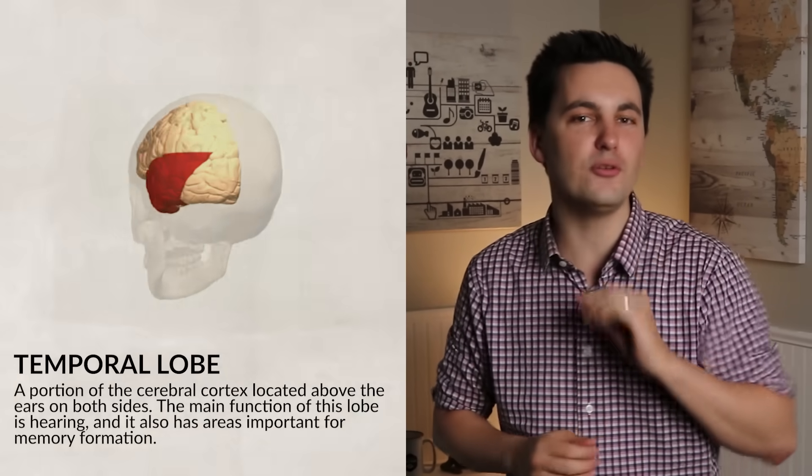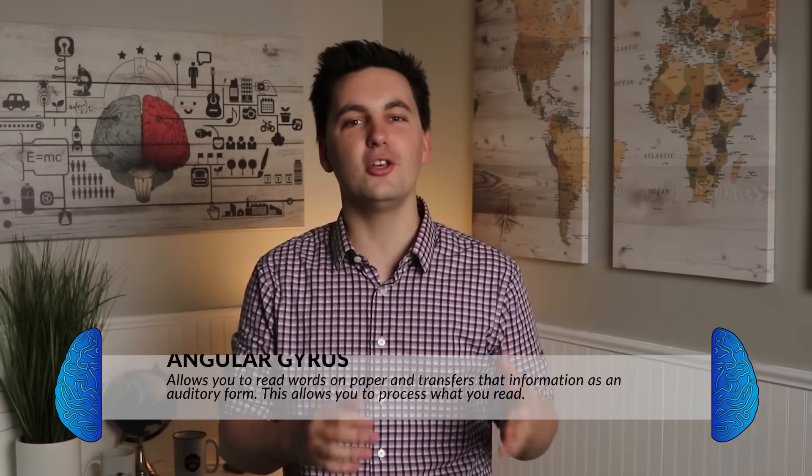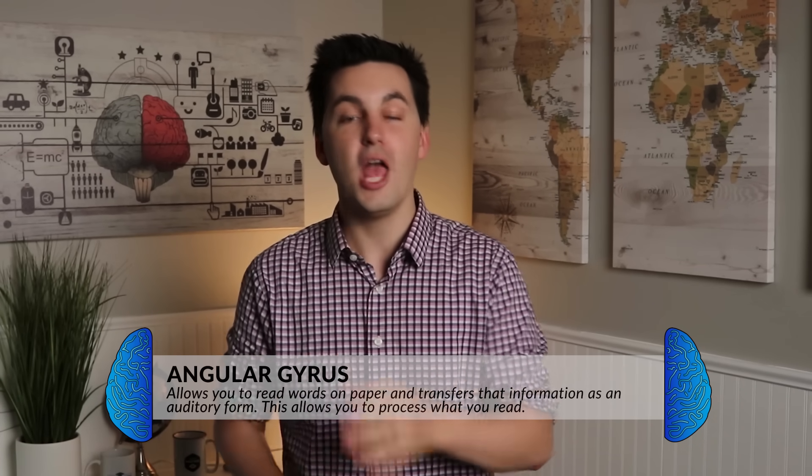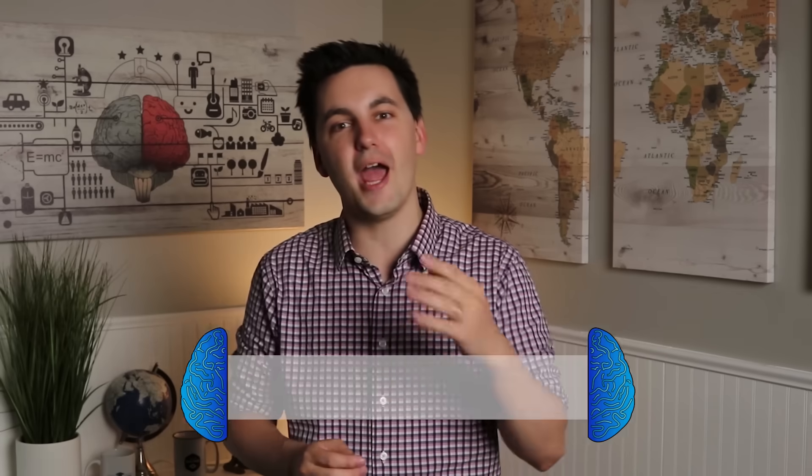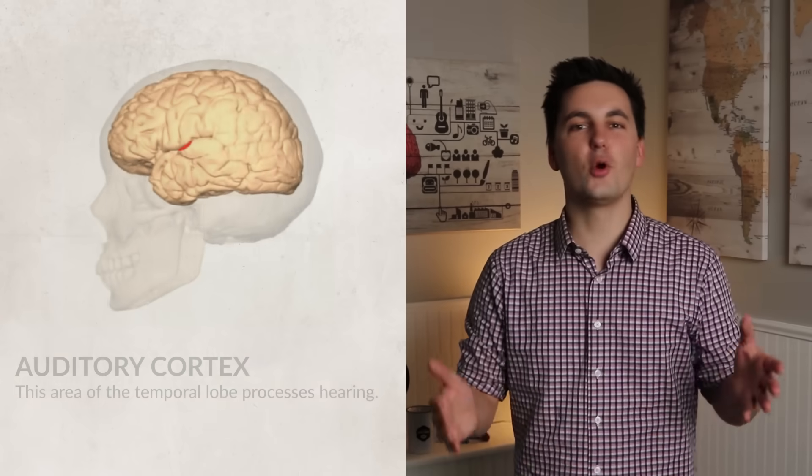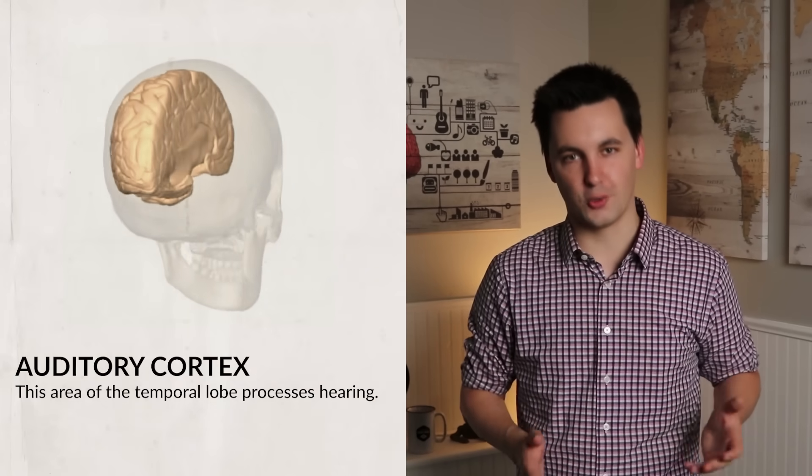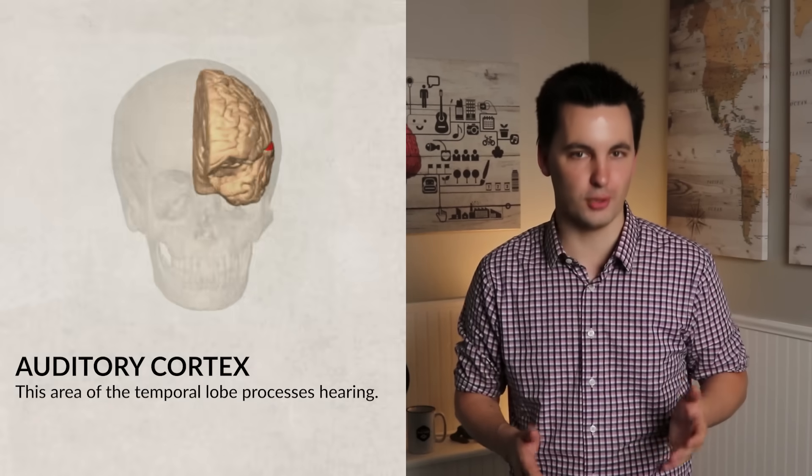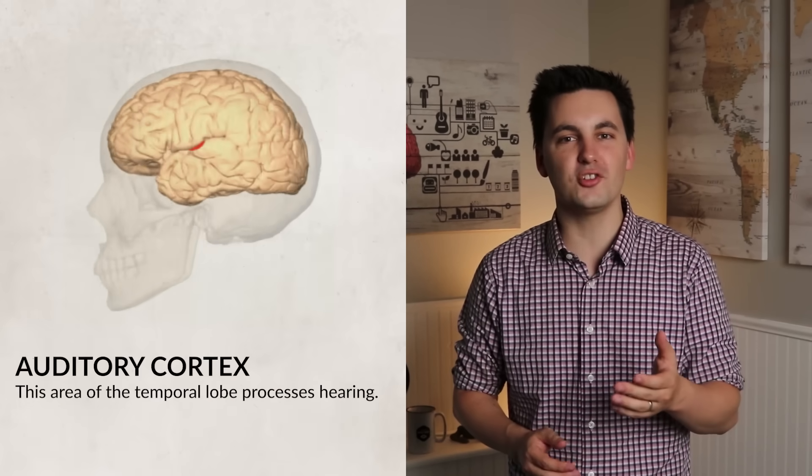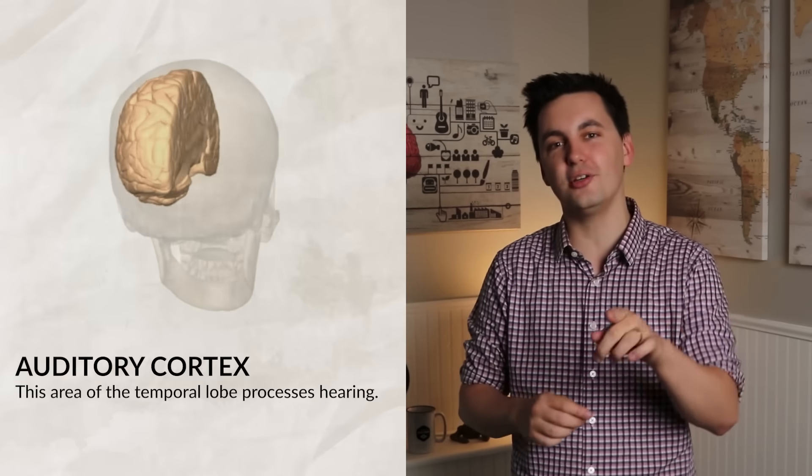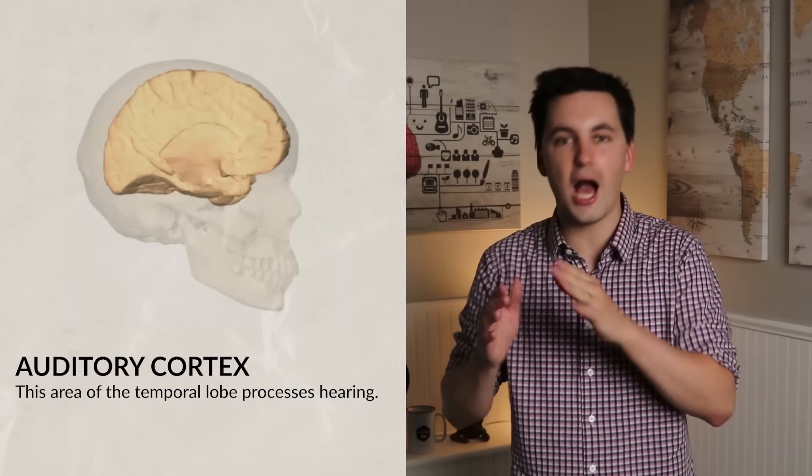This lobe consists of a few different parts. First, remember Wernicke's area. It's responsible for language and also comprehension. It's located in the temporal lobe. We talked about it at the start of this video. Located near Wernicke's area is the angular gyrus, which allows you to read words on paper and also transfer that information as an auditory form. This is what allows you to process what you read. Also located in the temporal lobe is the auditory cortex, which is located in the upper areas of the temporal lobe. This cortex is what processes your hearing and is actually hearing what is happening from the opposite ear.